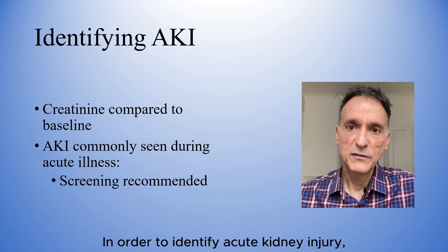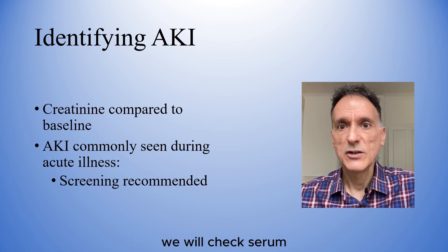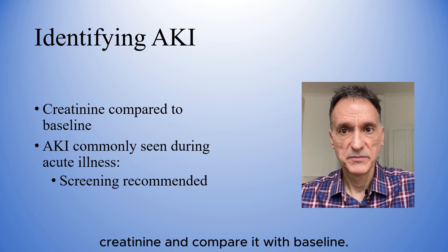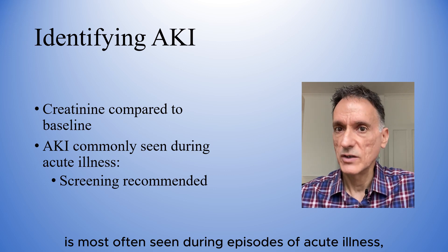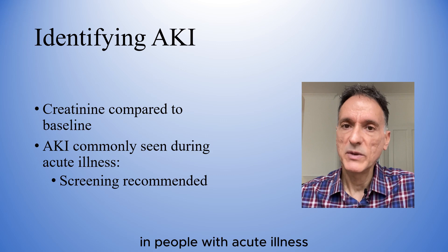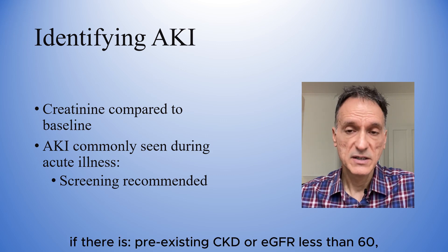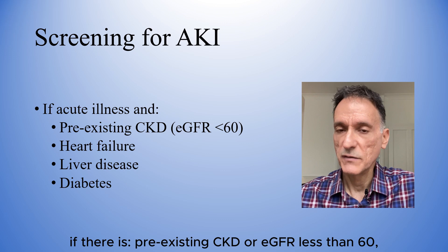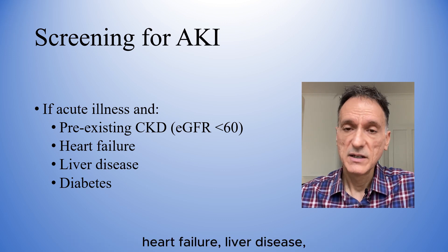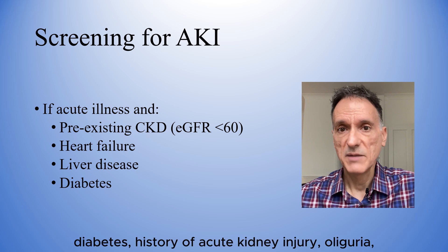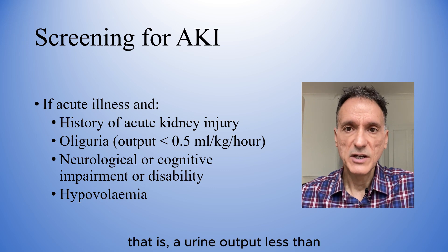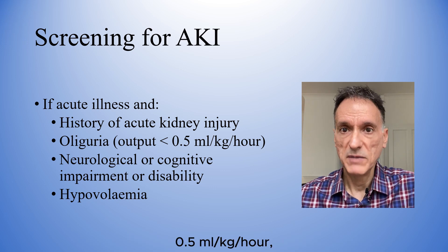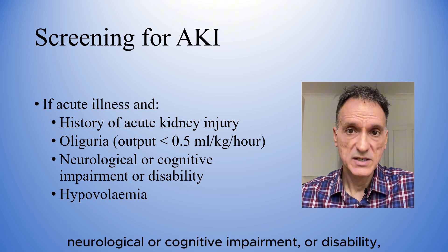In order to identify acute kidney injury, we will check serum creatinine and compare it with baseline. AKI is most often seen during episodes of acute illness, so we should do this screening in people with acute illness if there is pre-existing CKD or EGFR less than 60, heart failure, liver disease, diabetes, history of acute kidney injury, or oliguria — that is a urine output less than 0.5 millilitres per kilo per hour — or neurological or cognitive impairment or disability.